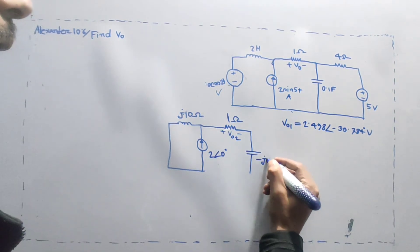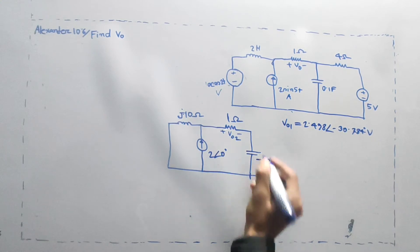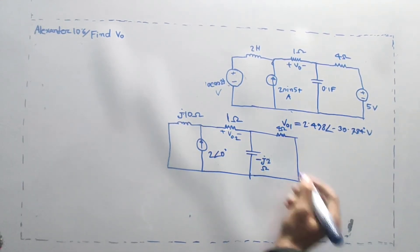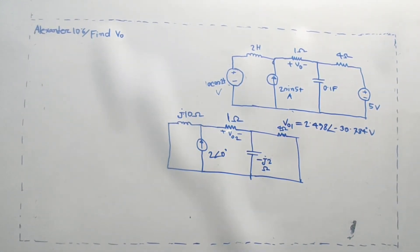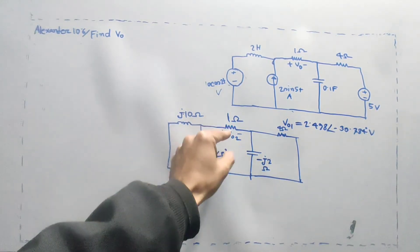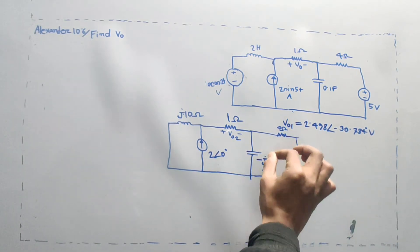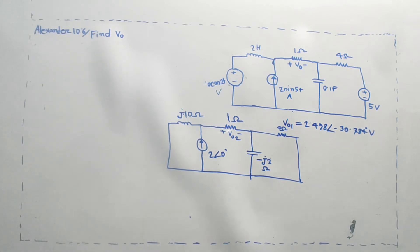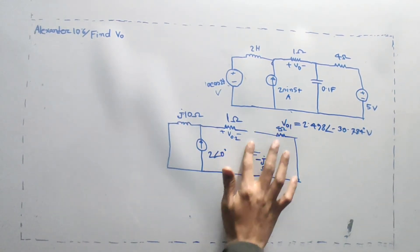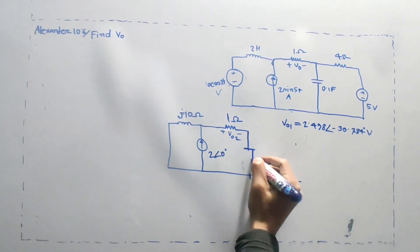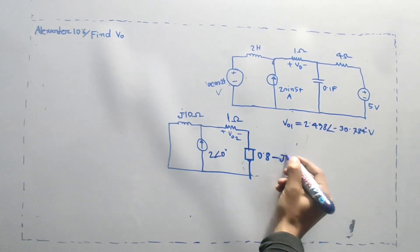With 1 minus j2 ohm and 4 ohm, the voltage source is simply shorted. The equivalent circuit is set up. We will find the current — the total current is 0.8 minus j1.6.